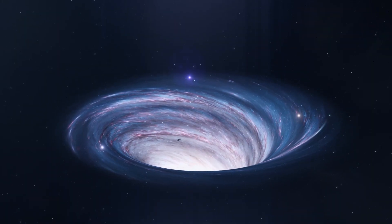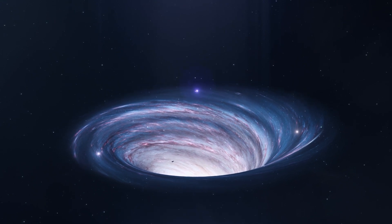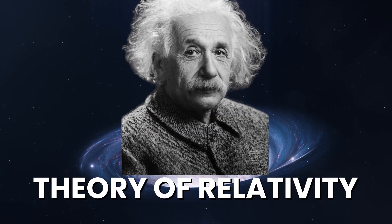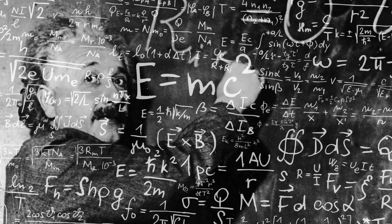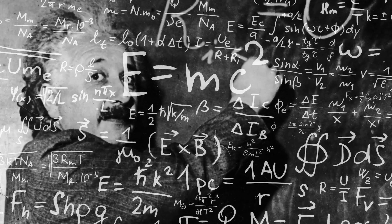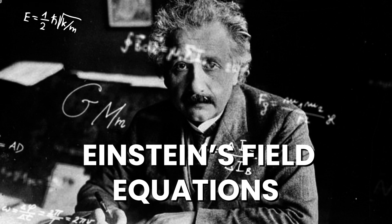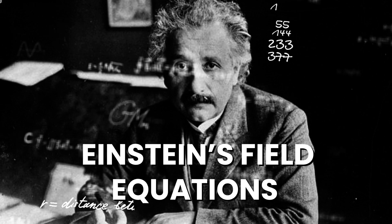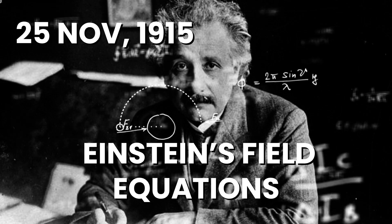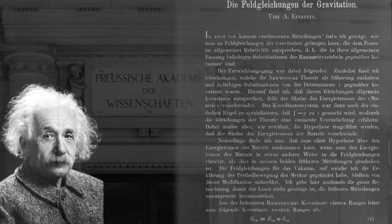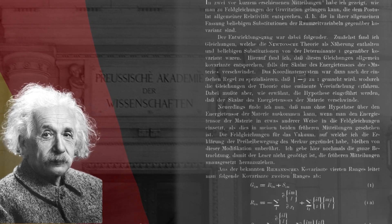Before we dive into the details of wormholes, we need to go back to Einstein's theory of relativity. When Albert Einstein wrote his theory of relativity, it was in the form of a set of equations known as Einstein's field equations. These equations were first published on 25th November 1915 in the Proceedings of the Prussian Academy of Science in Berlin, Germany.